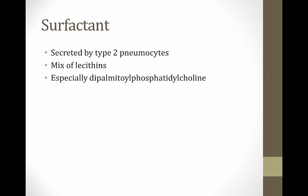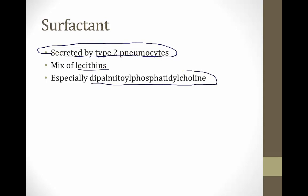Surfactant is secreted by type 2 pneumocytes, and it's high yield to remember that it's a mix of chemicals called lecithins — especially dipalmitoyl phosphatidylcholine. If you ever see a big word like that on an exam, they're probably talking about one of the substances that makes up surfactant.